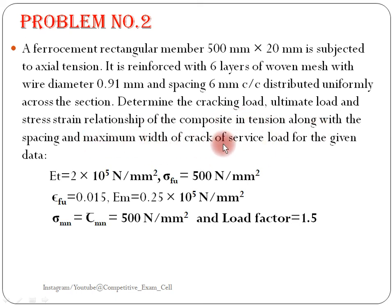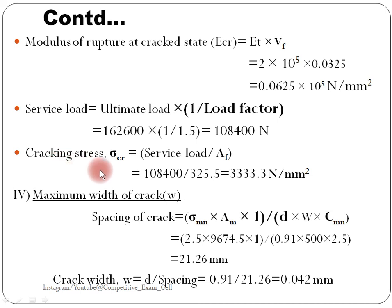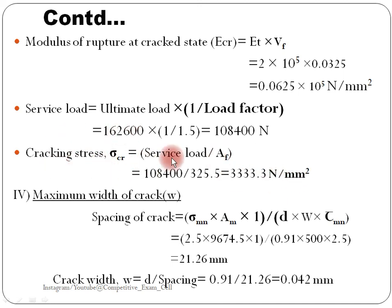For maximum width of crack at service load, first calculate the service load: service load equals ultimate load times (1 divided by load factor). Ultimate load divided by 1.5 gives 18,400 N (approximately). Then cracking stress equals service load divided by area of fiber af, giving approximately 56.5 N/mm².